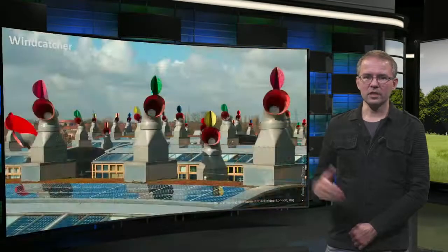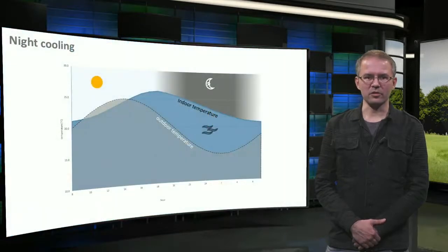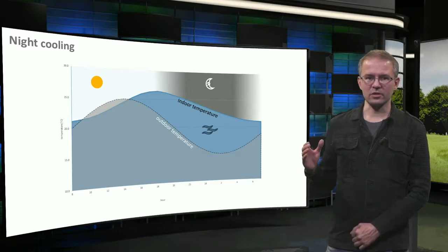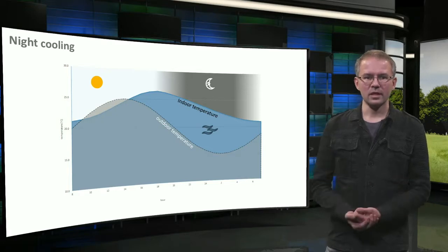This wind cowl is a modern example, used in the BedZED housing development in the UK. It automatically rotates with the wind. Night ventilation cools down the building at night so it can absorb more heat during the day. This example shows the effect of just using night ventilation — the mass of the building has cooled down so much that it takes several hours for the indoor temperature to catch up. Night ventilation does require building mass, so it will not work very well with light structures.